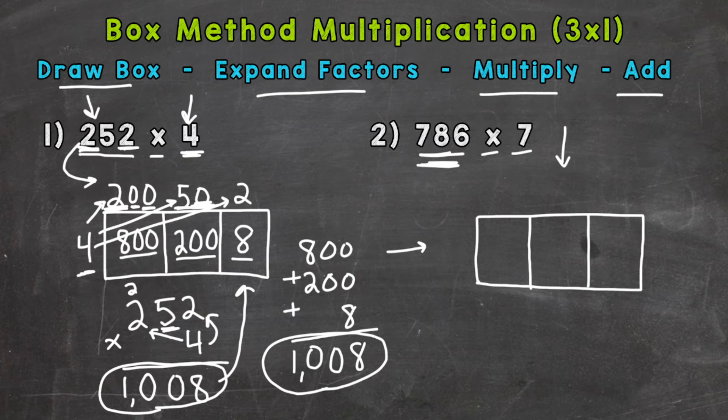Alright, expand our factors. We have a 700. This 7 here has a value of 700. Then we have the value of this 8, which is 80. And then the value of the 6, which is 6. Now along the side, we do the value of our second factor, which is just 7.